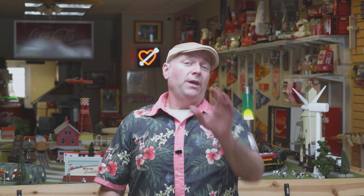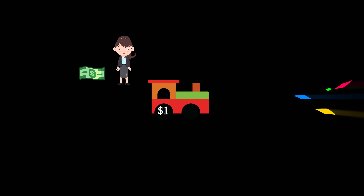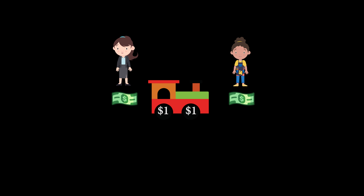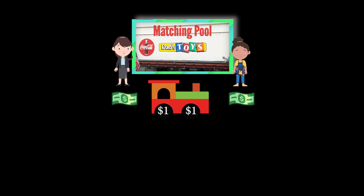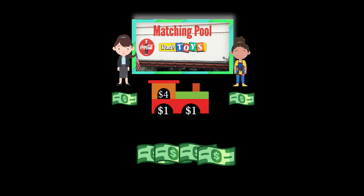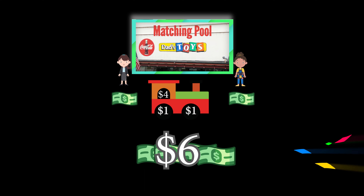For example, if you give a dollar to a toy train and your friend gives a dollar to a toy train, that's two dollars. Then the larger pool of funds will give another four dollars. So between you and your friend and the pool, that train receives six dollars.